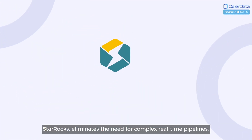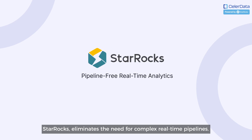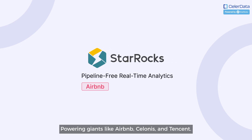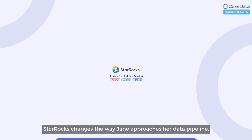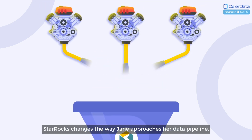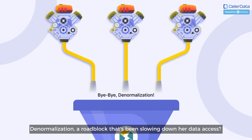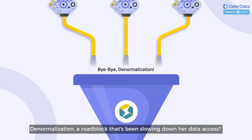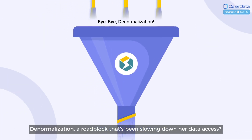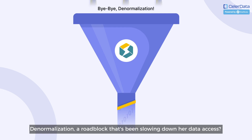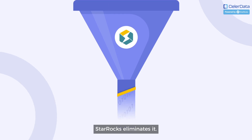StarRocks eliminates the need for complex real-time pipelines, powering giants like Airbnb, Salonis, and Tencent. StarRocks changes the way Jane approaches her data pipeline. Denormalization — a roadblock that's been slowing down her data access — StarRocks eliminates it.